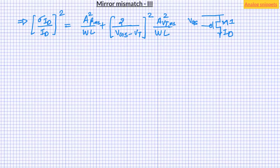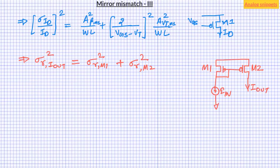And we defined the technology dependent parameters A_beta and A_VT. In the second part of the video, we saw that the variation of output current of current mirror has equal contribution from the input bias transistor and the output transistor. Here R stands for the relative error. And sigma_R square M1 and sigma_R square M2 has similar form as this equation.